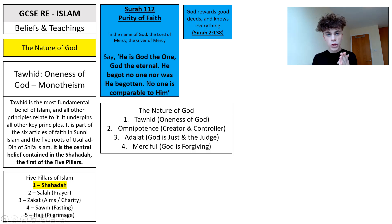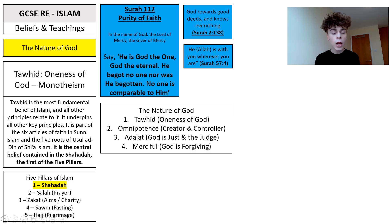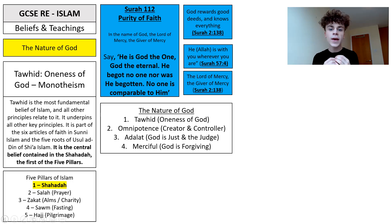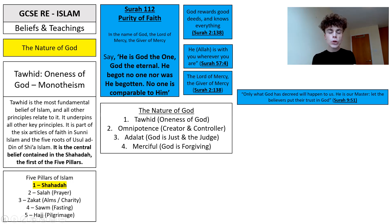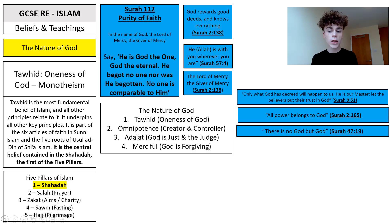More key quotes from the Quran: Surah 2 says 'God rewards good deeds and knows everything' — the idea of omniscience, all-knowing. 'He is with you wherever you are' — the idea of immanence, that God is alongside you. He is described as 'the Lord of mercy, the giver of mercy' — God is forgiving and compassionate. Surah 9 tells us 'only what God has decreed will happen to us. He is our master. Let the believers put their trust in God' — key ideas about predestination and omnipotence. Surah 47 gives us 'there is no God but God' — Tawhid, monotheism.